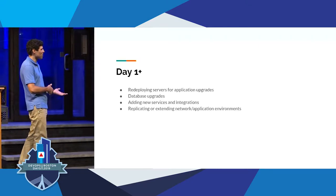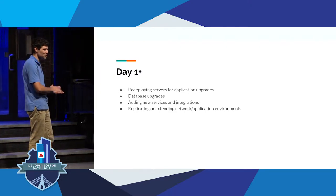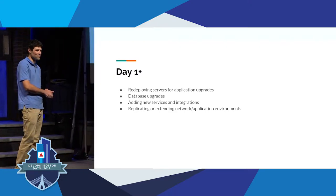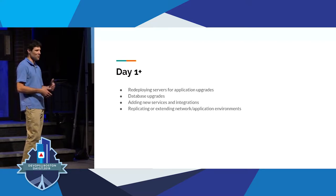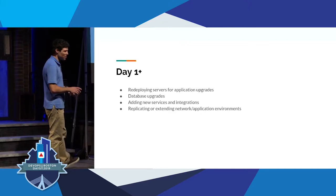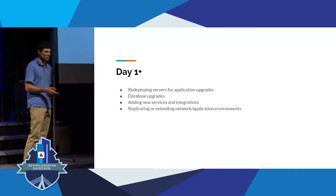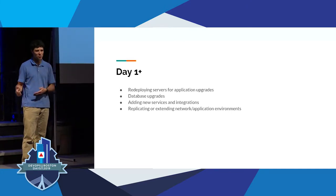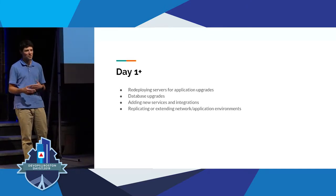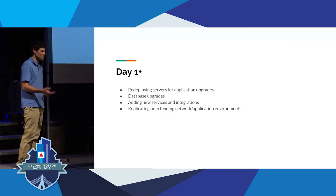Where it does become a problem is on day one forward, where you say: this application has some new requirement — I was using RDS, but now I need a queue service deployed. You can probably hack that into your procedural logic, and everything will keep working. But as you get more and more additional requirements, things just start to snowball. You have brittle code, things break.